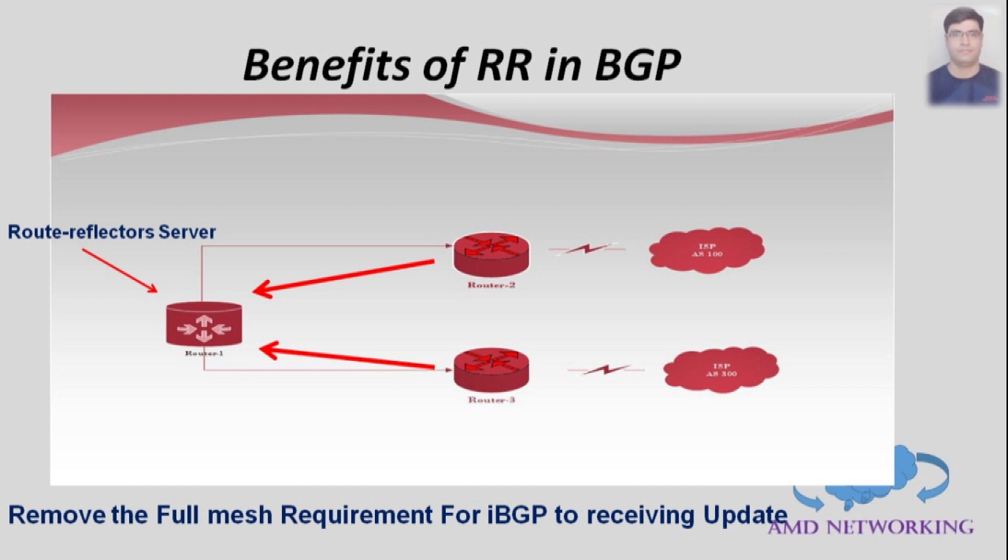Now route reflectors come to picture. With the help of route reflectors in BGP to allow us to bypass this restriction, fewer neighbor connections will result in less bandwidth and CPU usage. Route reflector clients form neighbor adjacencies with the route reflector server. BGP updates will flow from server to the client without the clients having to interact with each other. Router 1 can be configured as a route reflector server. Both router 2 and router 3 would only need to peer with router 1.